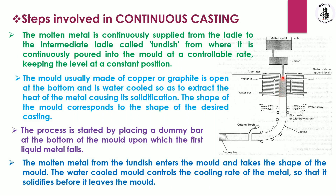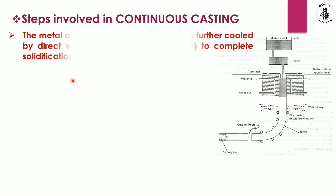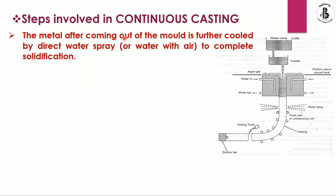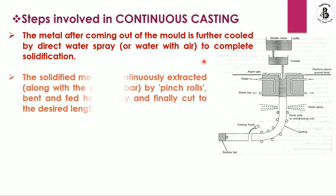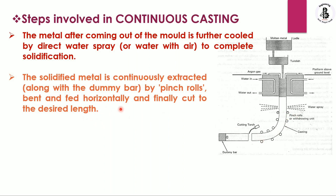The molten metal is completely solidified by the end of the mold. After coming out of the mold, the metal is further cooled by direct water spray with air to complete solidification. The solidified metal is continuously extracted by pinch rollers, which bend and feed it horizontally, and it is finally cut to the desired length.